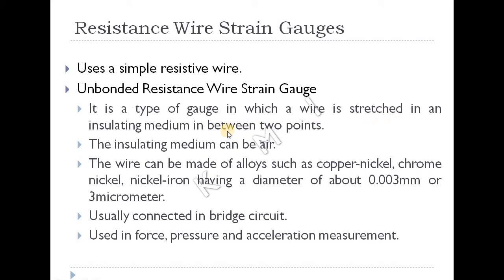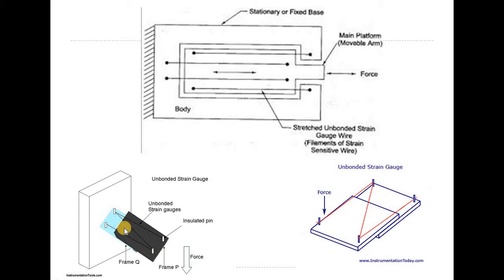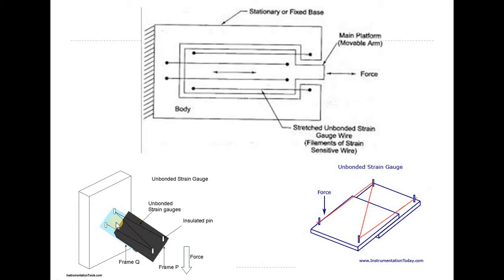The wire is stretched in an insulating medium between two points. The resistance wire is connected between frame Q and frame P. Frame P is fixed, and frame Q is the moveable part. The wire's resistance changes with movement. This is the unbonded strain gauge.